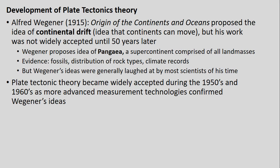Plate tectonics theory is at least 100 years old. The most famous person to put this idea forward is Alfred Wegener, a German scientist who laid this out in 1915 in his book 'The Origin of Continents and Oceans,' proposing what he called continental drift — the idea that the continents can actually move around. Wegener also initially proposed the idea of Pangea, a supercontinent comprised of all land masses together hundreds of millions of years ago. He based this on evidence including fossils and distribution of rock types found in South America and Africa.